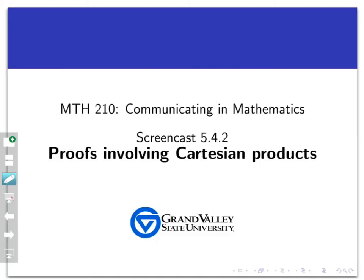Welcome back to another screencast about Cartesian products. In this video, we're going to work a proof of a set identity that involves Cartesian products. In your textbook, you don't see a lot of set identities about Cartesian products, unlike some of the earlier sections. So we're going to have to sort of build our own when we need them, and this is a good example of how we're going to do that.